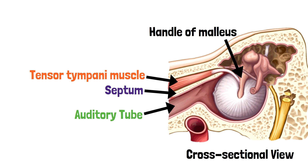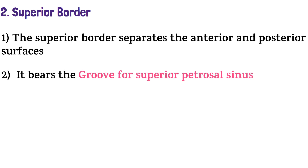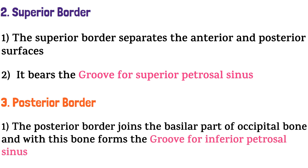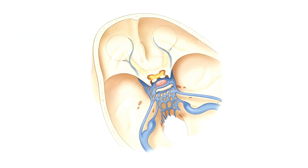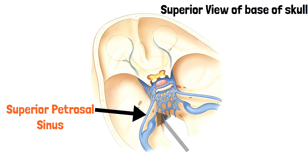Next we have the superior and posterior borders of the petrous part. The superior border separates the anterior and posterior surfaces, and bears the groove for the superior petrosal sinus. The posterior border joins the basilar part of the occipital bone, and with this bone forms the groove for the inferior petrosal sinus. In the superior view of the base of skull, this is the superior petrosal sinus, and lateral to it is the inferior petrosal sinus.